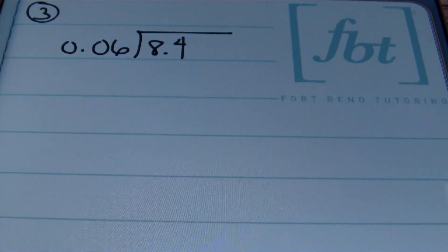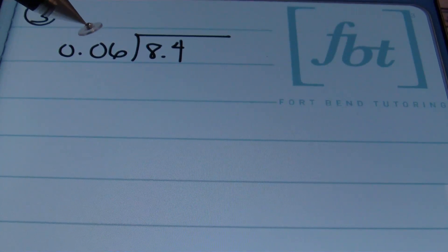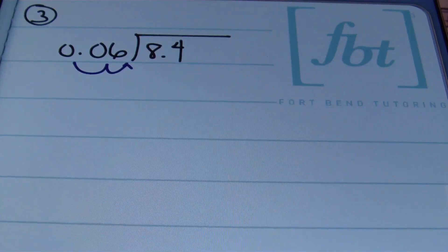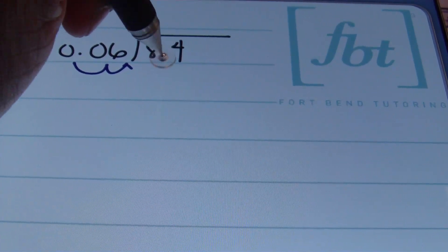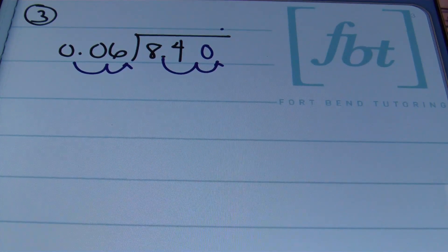In our next problem, we have 0.06 as a divisor and we're seeing how many times it goes into 8.4. This is the first time our divisor has a decimal showing. We'll start by moving the decimal two places to the right in the divisor to place it behind the last non-zero digit. Since we moved the decimal two places right in the divisor, we also move it two places right in the dividend, then bring that decimal straight up.